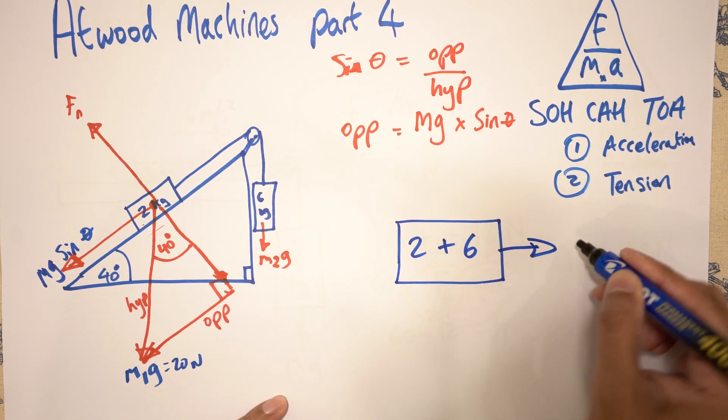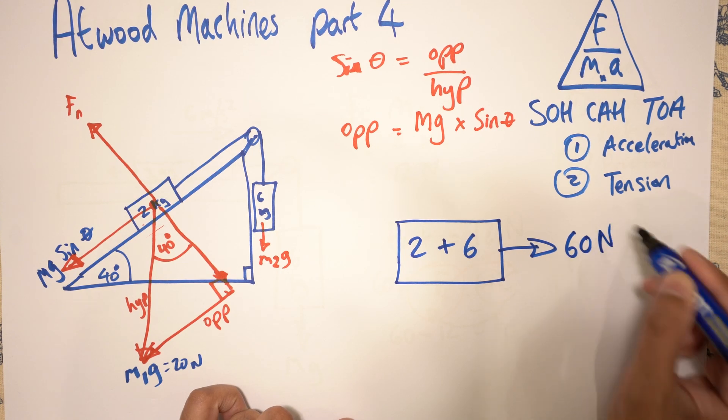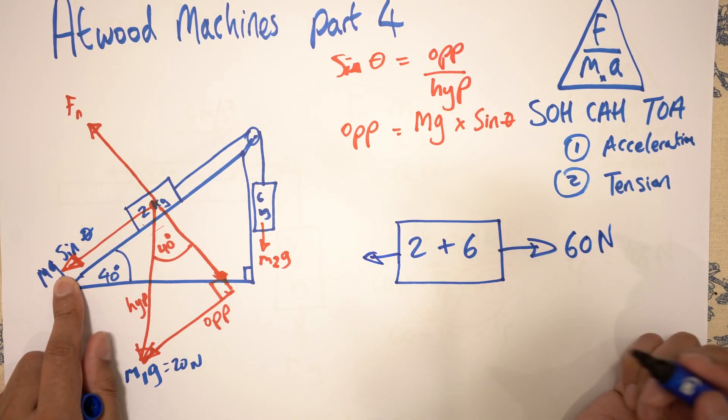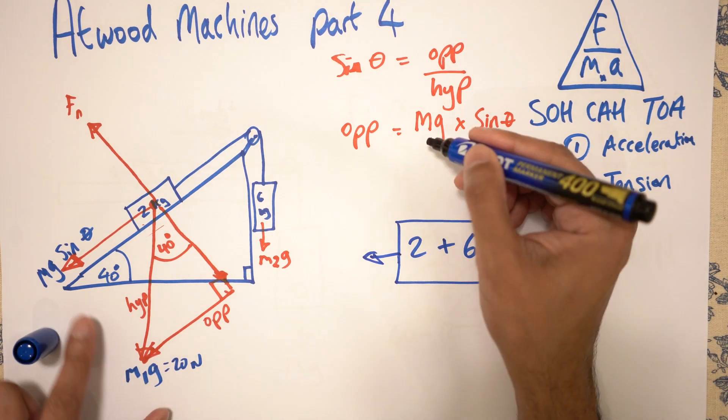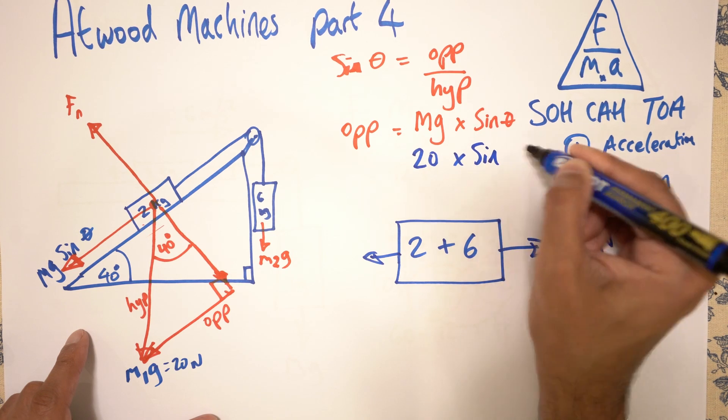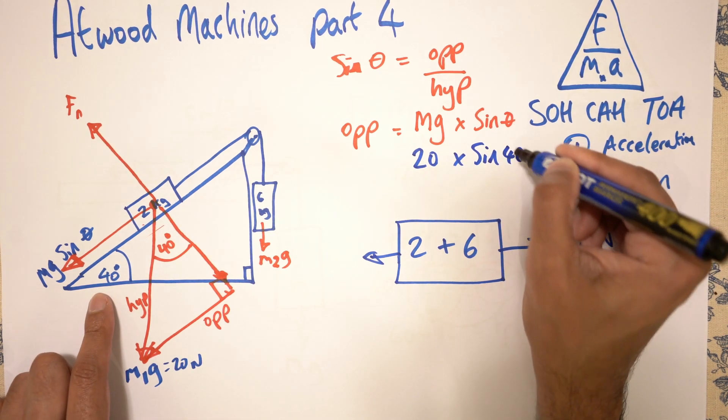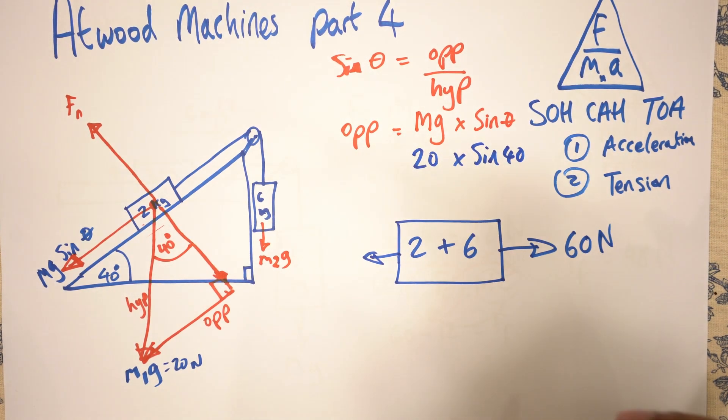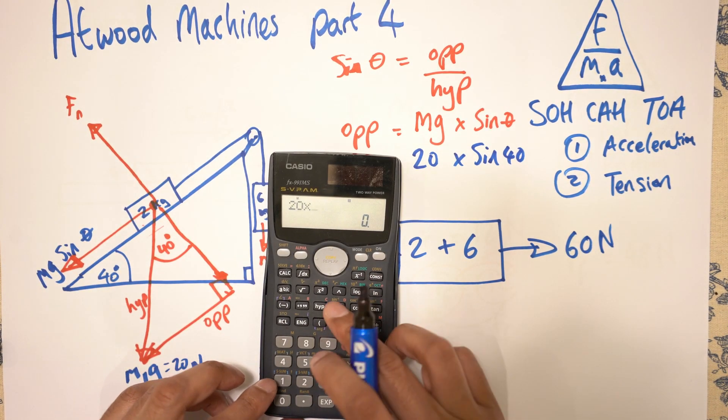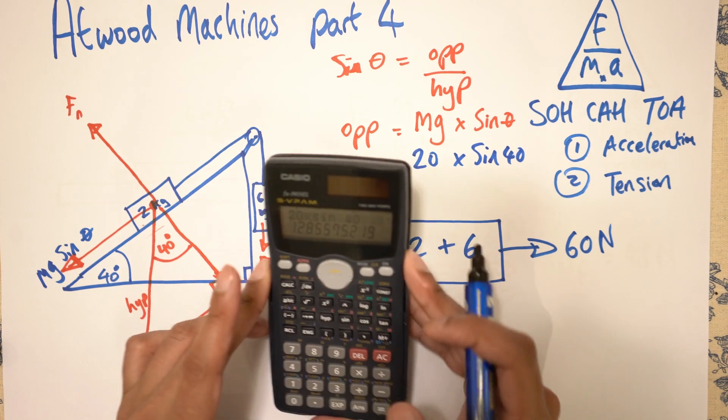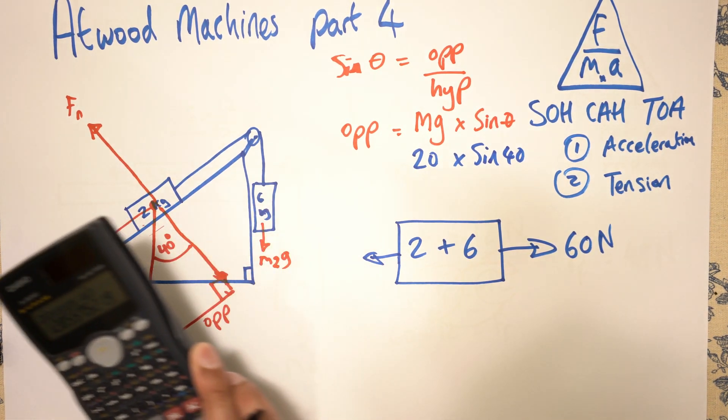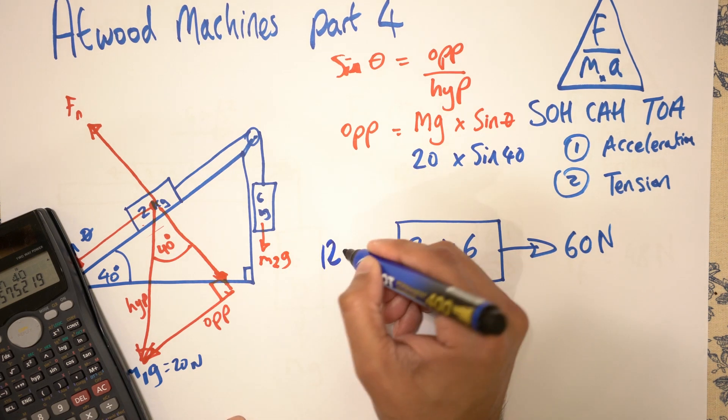So you have 2 kg plus 6 kg. On this side, we have M2G, which is 60 Newtons. And on this side, we have M1G sin theta. Let's work that out. M1G is 20 times sine 40. Let me get my calculator out. 20 times sine 40, which equals 12.86 Newtons.